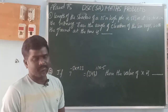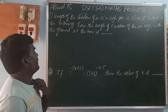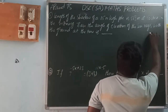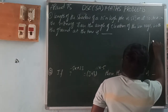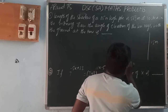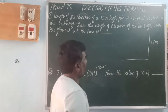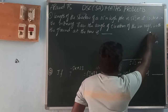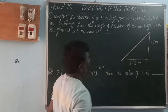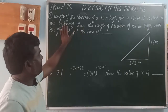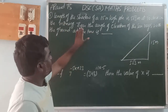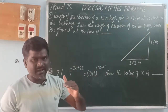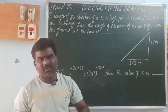Okay, first problem: the length of the shadow of a 15 meter high pole. The pole height is 15 meters. The shadow length is 5√3 meters. At seven o'clock in the morning, the angle of elevation of the sun rays is observed at the top. So, angle of elevation.